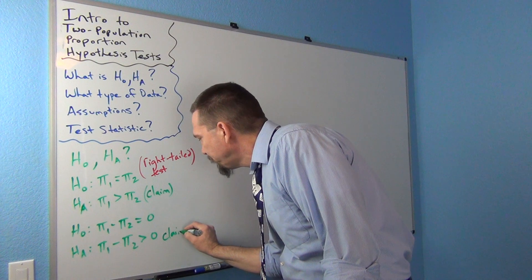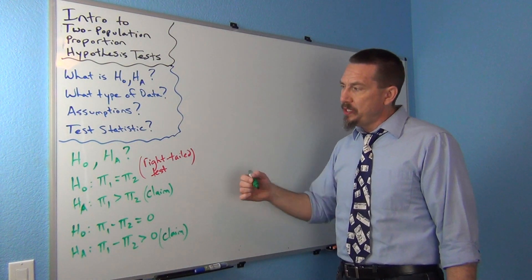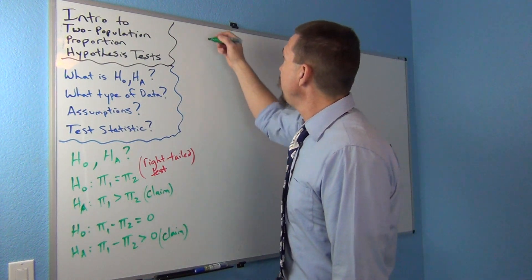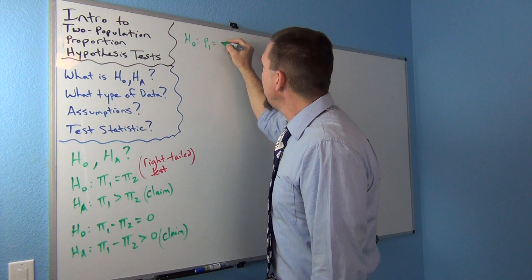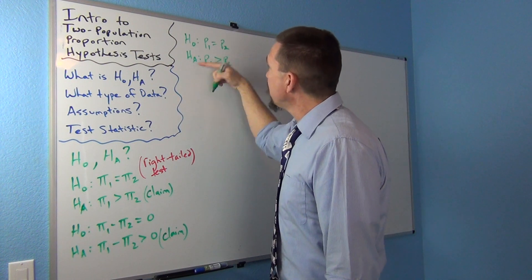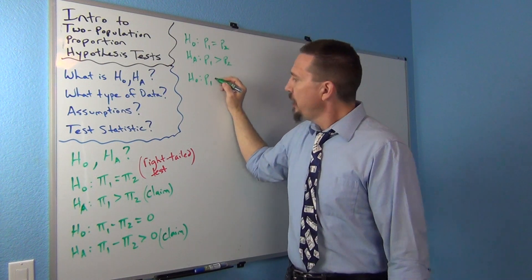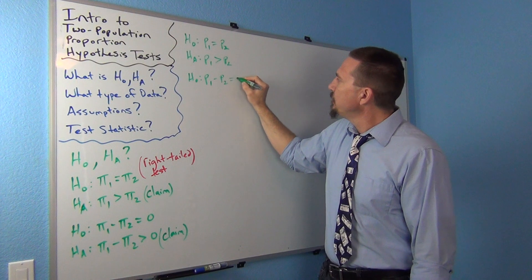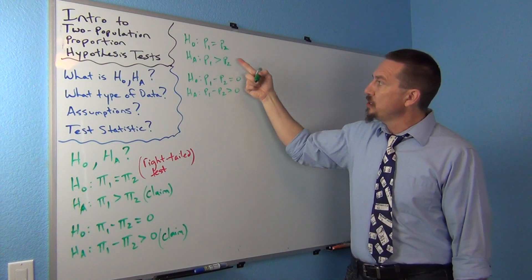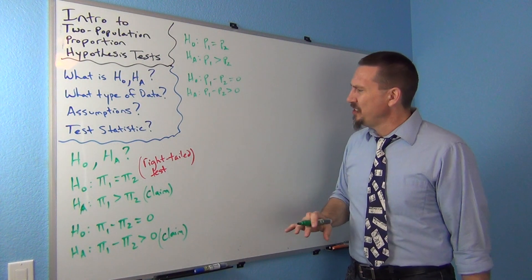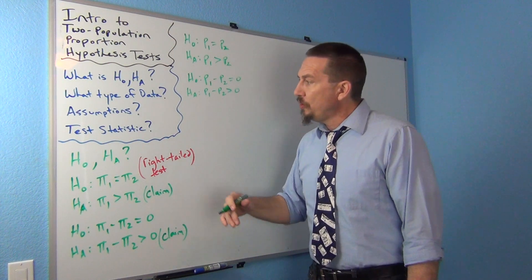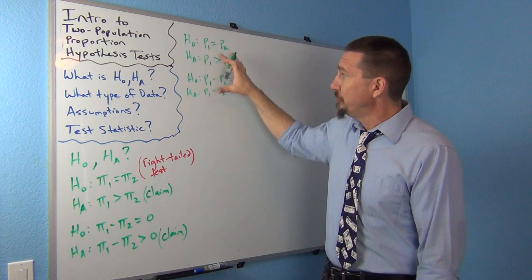If your stats class uses p instead of pi for population proportion, it's the same idea — you'd write p1 equals p2 for the null and p1 greater than p2 for the alternative. Equivalently, p1 minus p2 equals zero and p1 minus p2 is greater than zero. You'll often see computer programs write it that second way. It just depends on whether your class uses pi or p as the symbol for population proportion, but it all means the same thing.